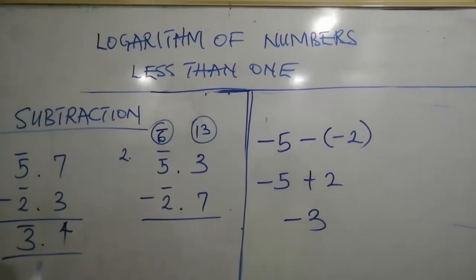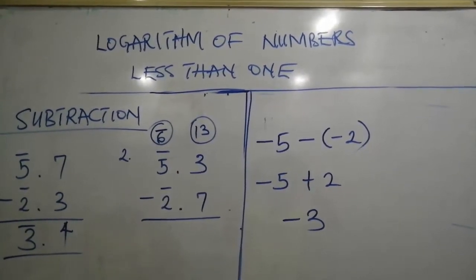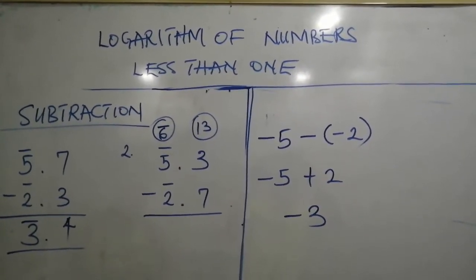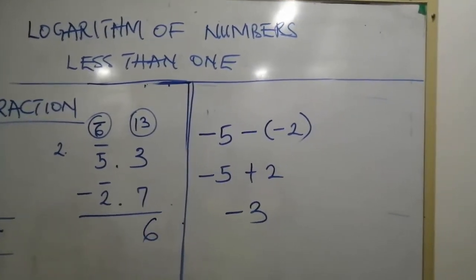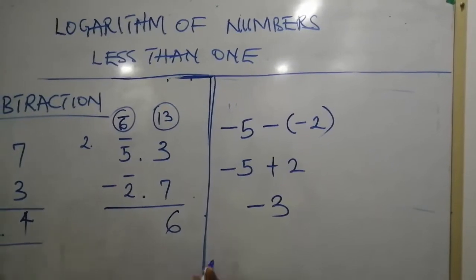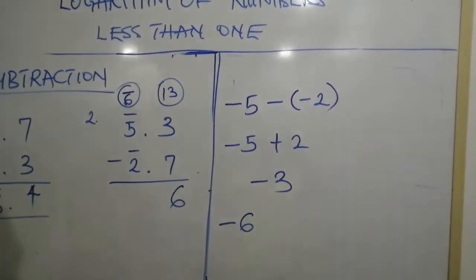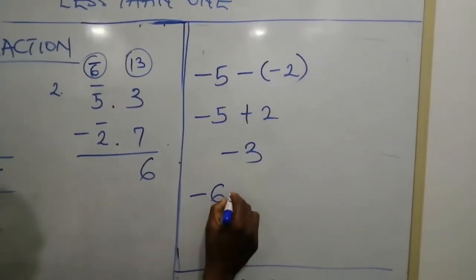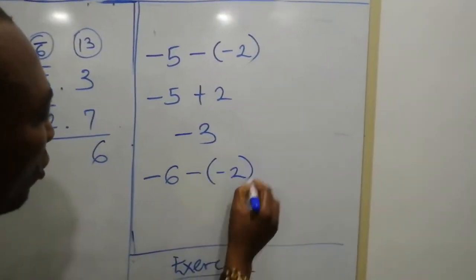Take 7 away from 13. That will be, alright, we have bar 6 here, that is minus 6, minus into minus 2.